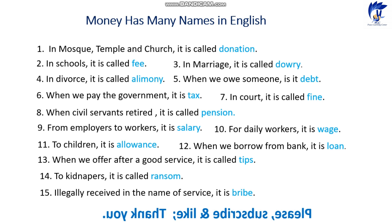Number ten: for daily workers it is wage. It's paid daily or weekly when the people work and get the money — we call this money wage. Number eleven: to children it is allowance. It's a kind of money the parents give to the children so they can spend it on daily expenses or whatever they want to buy. We call this money allowance.